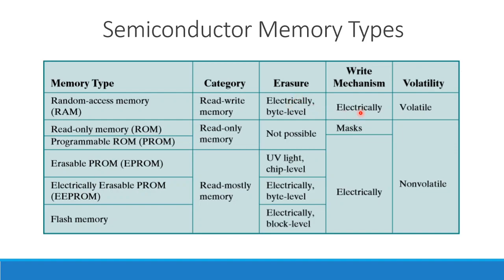The write mechanism for RAM is electrical. Regarding volatility: when power is off, the data is not stable. RAM is volatile — when power is turned off, data is automatically flushed out. That is what makes it volatile.